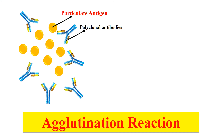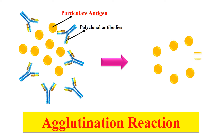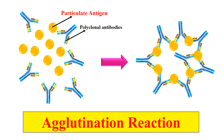With the help of this diagram you can understand the agglutination reaction. The light orange color represents the particulate or solid antigen, while the other molecule represents a polyclonal antibody which is bivalent and has more than one antigen binding site. When these polyclonal antibodies interact with the solid antigen, there is a formation of visible clumping which can be seen very easily. This interaction between antibodies and solid antigen resulting in visible clumping is known as an agglutination reaction.